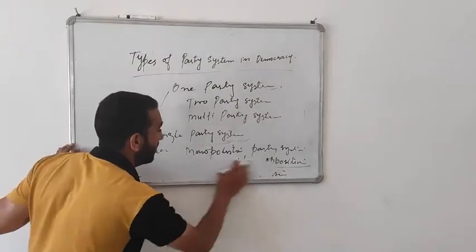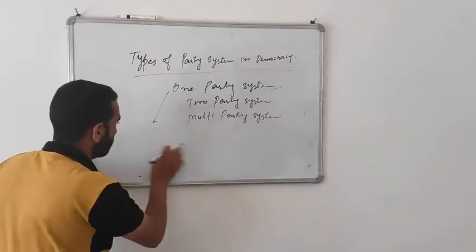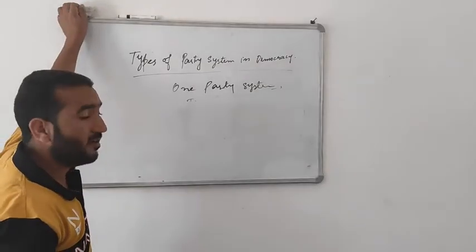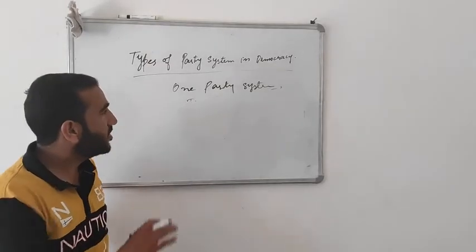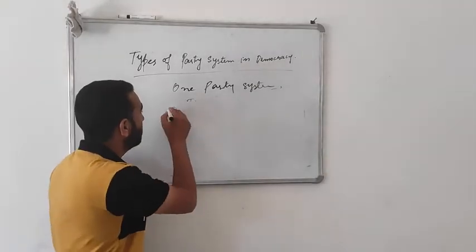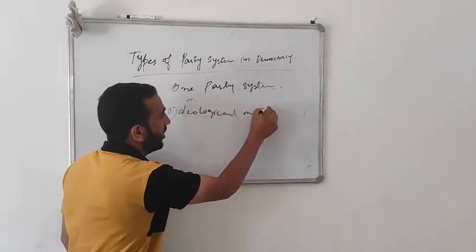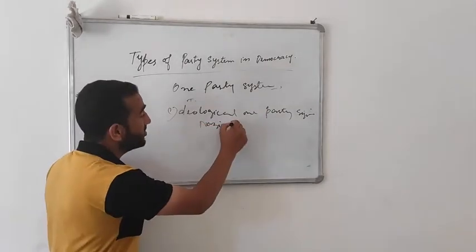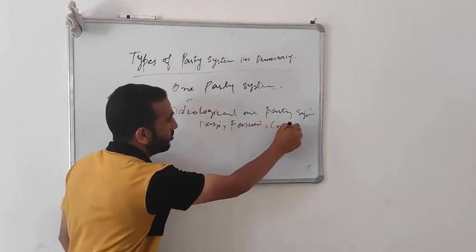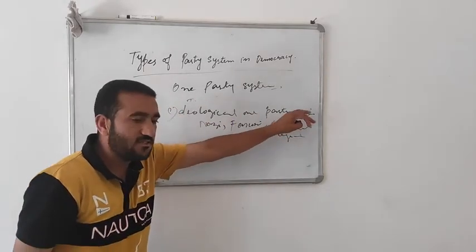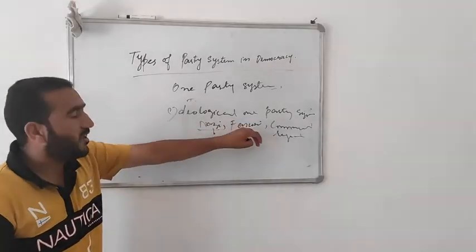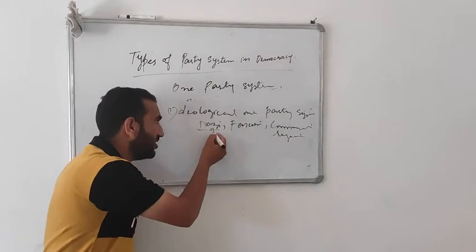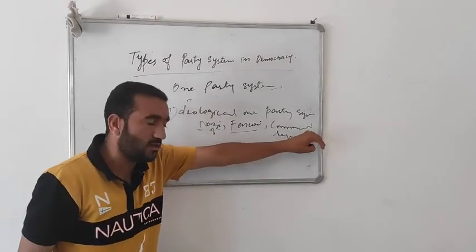The one-party system has again been divided into various types. The first is the ideological one-party system. If we talk about Nazism, fascism, or communist regimes — for example, Hitler in Nazi Germany and Mussolini in fascism — these fall under the ideological one-party system.